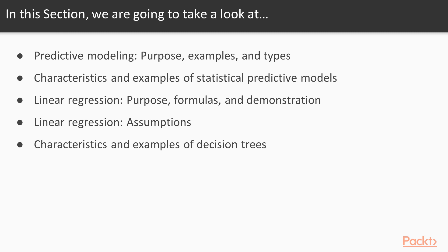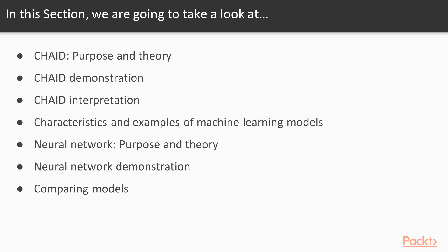From there, we'll talk about the characteristics and provide some examples of decision tree models, which are another type of model. And after that, we're going to specifically talk about CHAID, which is a type of decision tree model — we'll talk about its purpose and its theory.